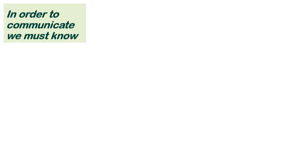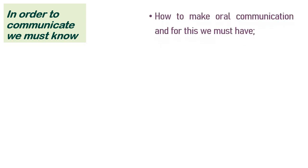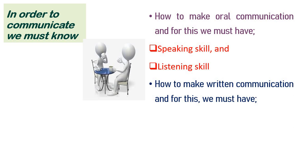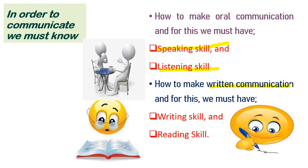In order to communicate, whether verbal or nonverbal, you must have certain skills. For oral communication, you need speaking skill and listening skill — you are talking to someone and that person must know how to listen, and you must know how to speak. For written communication, you need writing skill and reading skill. Without writing and reading skill, you cannot communicate in written form. So as a whole, for communication skills, you must have all four: listening, reading, writing, and speaking.